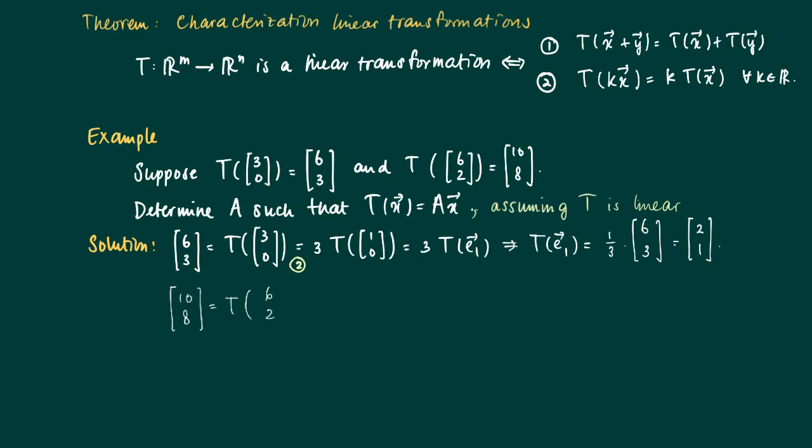Now [10,8] which is the image of the vector [6,2]. Well we write [6,2] differently because [6,2] is [6,0] plus [0,2]. So we use property 1 to conclude that T of [6,2] equals T of [6,0] plus T of [0,2].